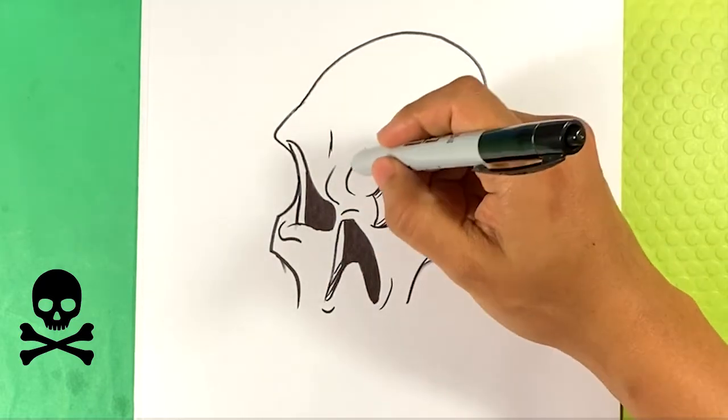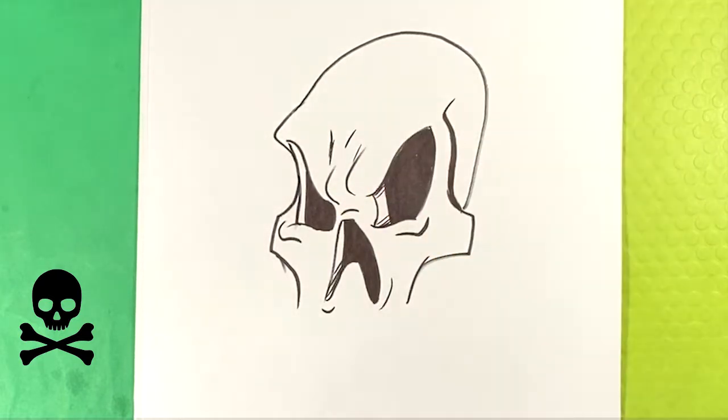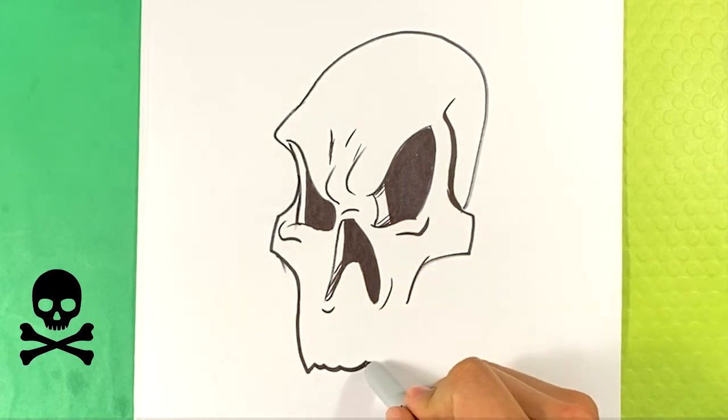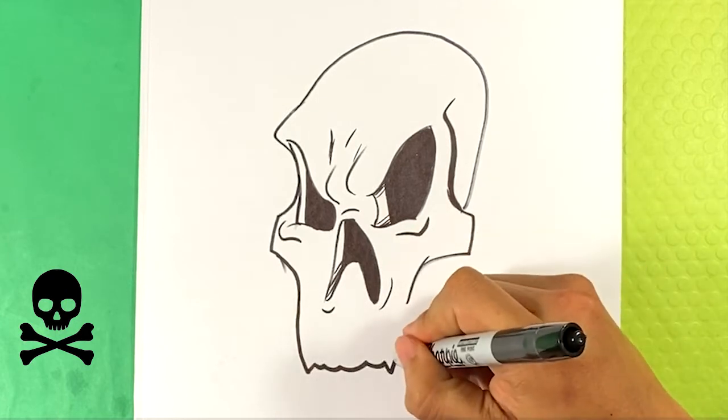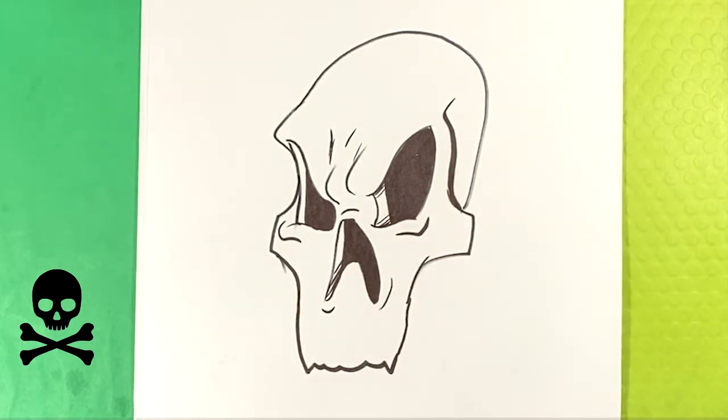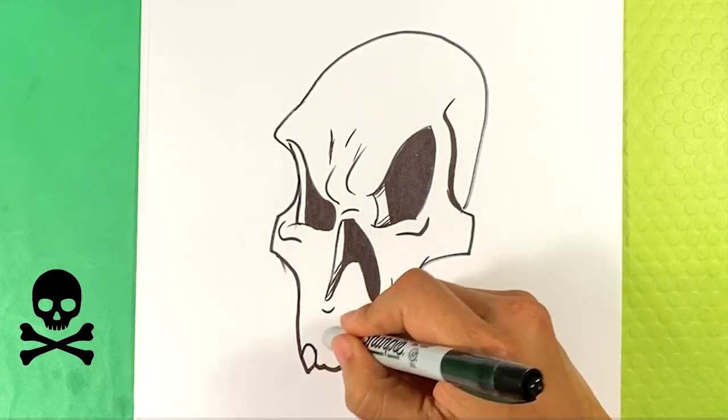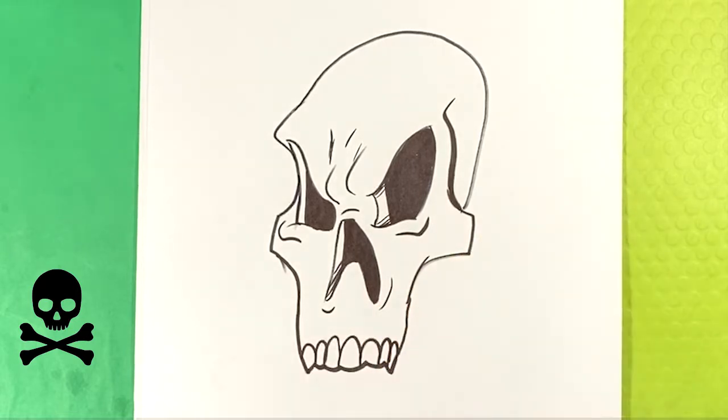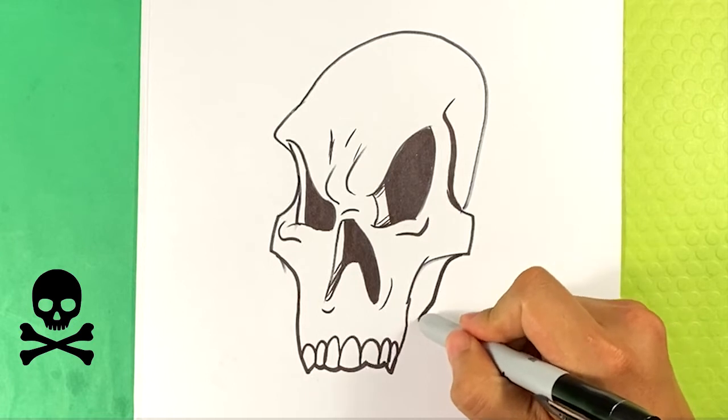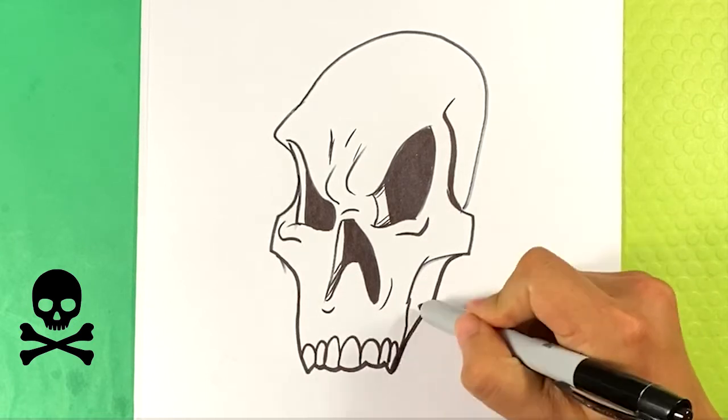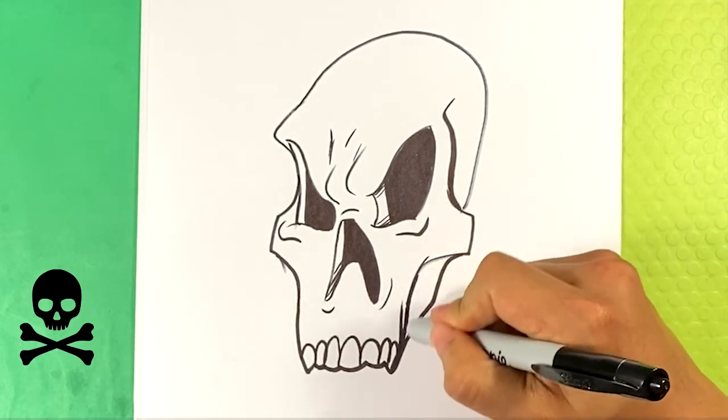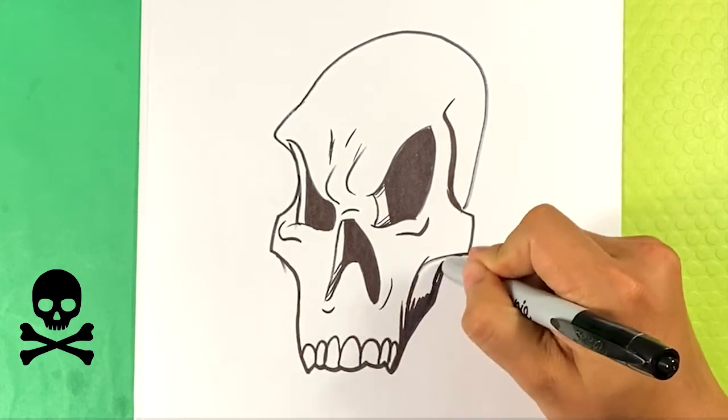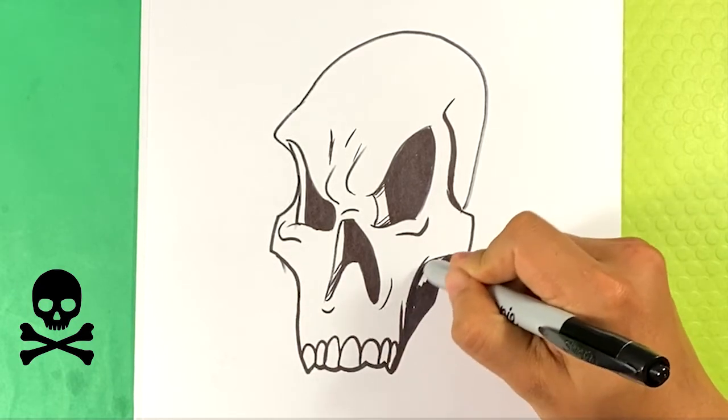I'm gonna pull a line here for the wrinkling of the middle of the head there. Down, bump, bump, bump, bump. Downward here. And you kind of see the top part of the bone there. Curve, curve, curve, curve, curve for the teeth right there. Gonna go over here on this side, down. Fill it in.